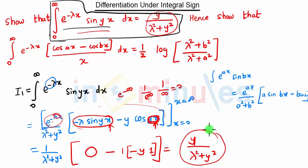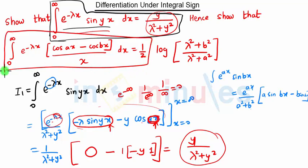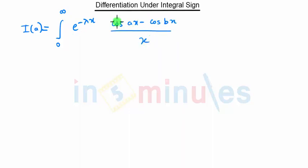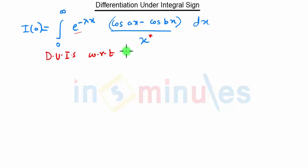Now we use this result to solve the main equation using DUIS with two constants a and b. We consider I(a) = ∫₀^∞ e^(-λx) · (cos ax − cos bx)/x dx. Since we have x in the denominator, we cannot directly use the cosine formula, so we apply DUIS with respect to a.